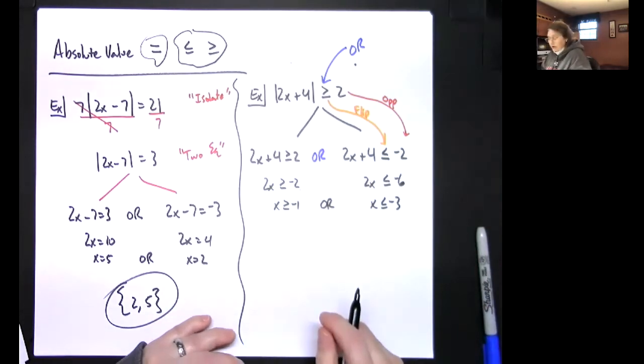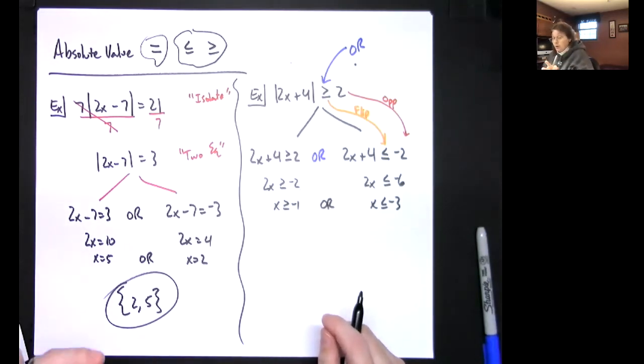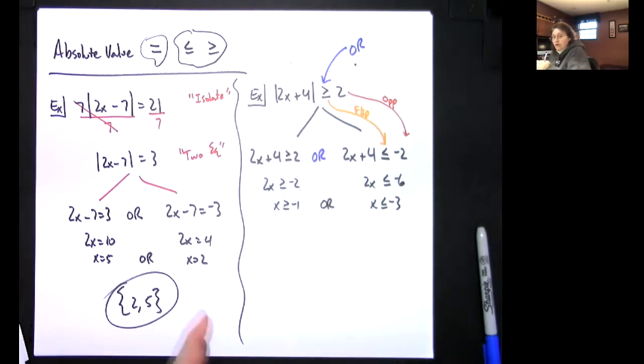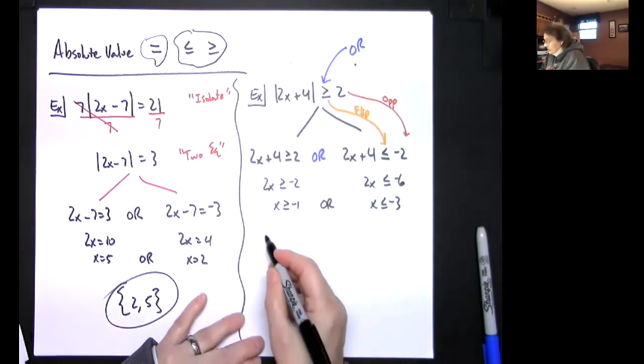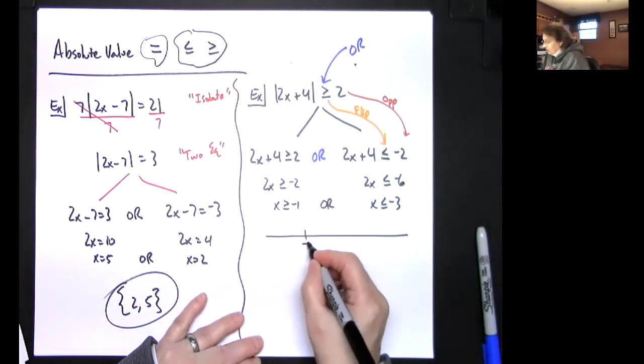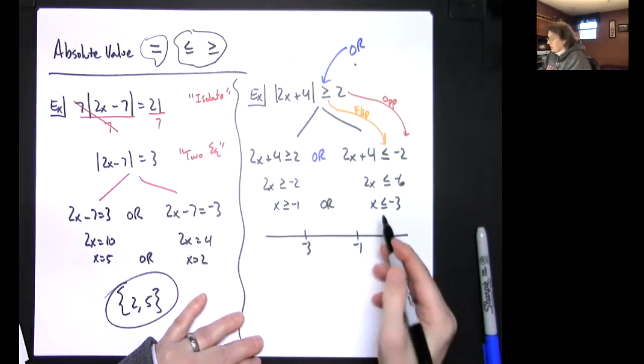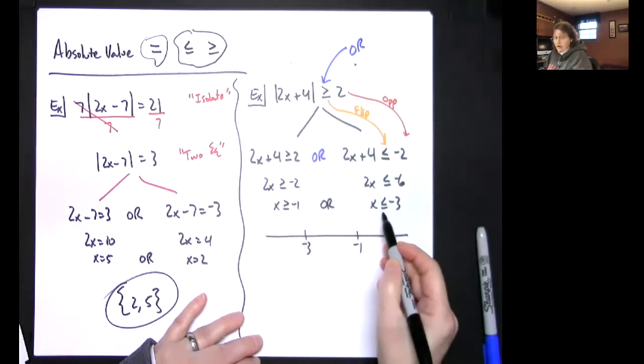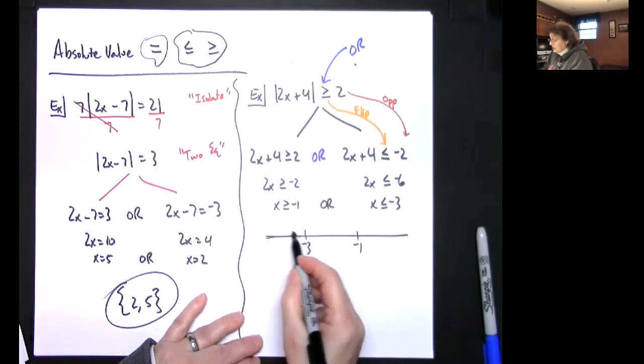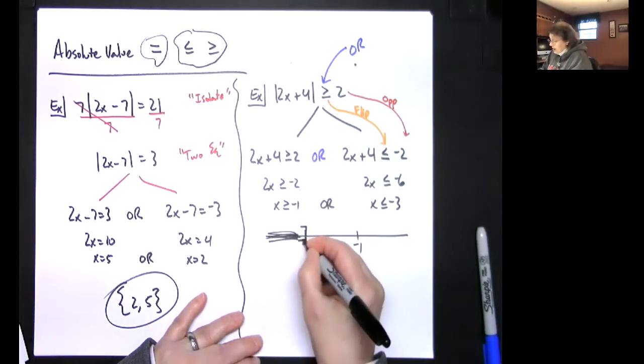Because on this one we could write an interval notation but we can also draw it on our number line. I would do the number line first and then do the interval notation. So let's do that. I'd have a negative 3 sitting down here, I'd have a negative 1 here. This says x is less than or equal to, so that would be shading this way with our square bracket.